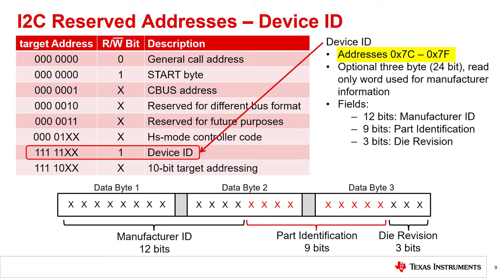Addresses 7C to 7F are all reserved for device ID. The controller starts by sending the reserved device ID address followed by a write bit. The controller then sends the target device address that it wants to identify. The controller then sends a restart condition followed by the reserved device ID address followed by a read bit. The diagram shows the data format from the 3 bytes of device ID. This data starts with 12 bits for the manufacturer ID, followed by 9 bits for the part identification, completed by 3 bits for the die revision.